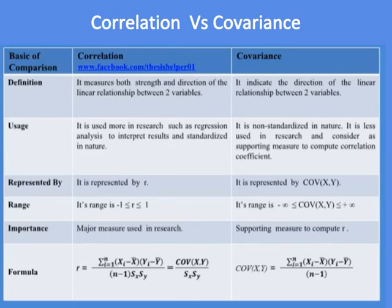The correlation coefficient is represented by R, while covariance is represented by COV(XY). The range of the correlation coefficient is between minus 1 and plus 1, while the range of covariance is between minus infinity and plus infinity.